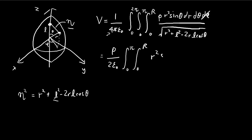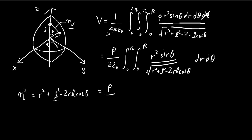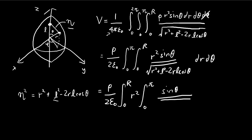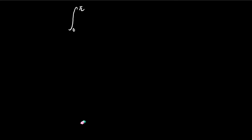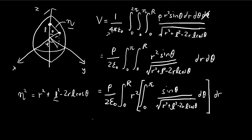At this point it's still a rather ugly integral. The way we solve this is to break it into two steps. We can rearrange the integral and integrate the theta term first, pulling the r-squared out and separating the terms. I'm going to do the u-substitution directly. We want to let u equal r squared plus L squared minus 2rL cosine of theta.